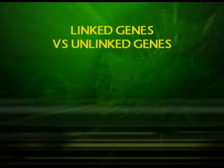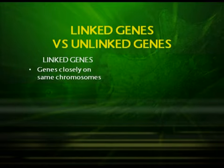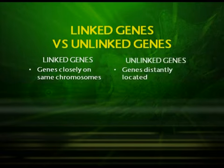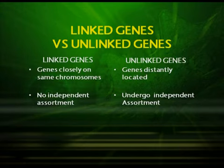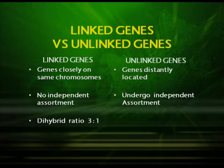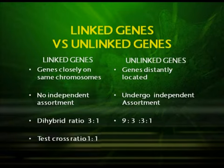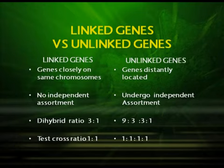Now we are in a position to differentiate linked genes and unlinked genes. The linked genes are genes closely located on the same chromosome, while unlinked genes are distantly located. In linked genes, no independent assortment takes place; in unlinked genes, we can see independent assortment. In the case of linked genes, the dihybrid ratio is 3:1; in unlinked genes, the ratio becomes 9:3:3:1. The test cross ratio result in linked genes is 1:1; in unlinked genes, it is 1:1:1:1.